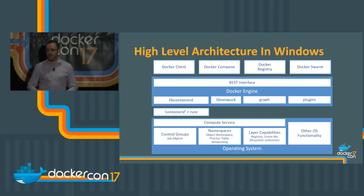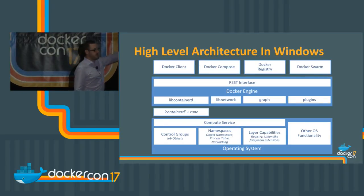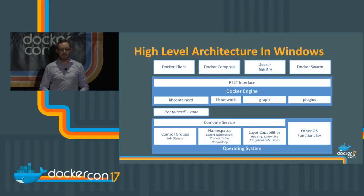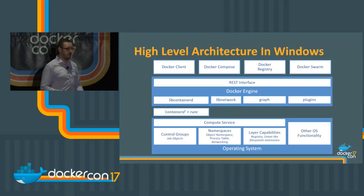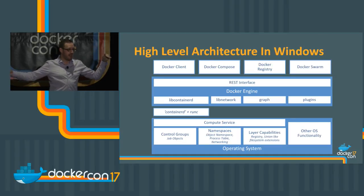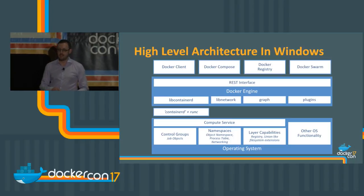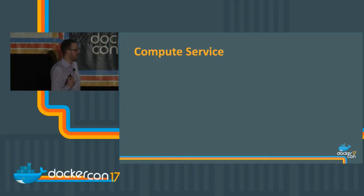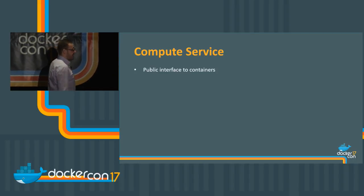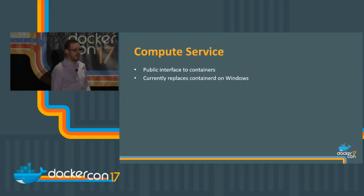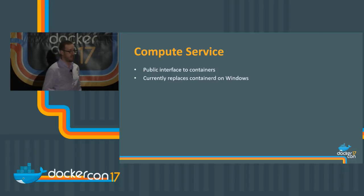The reason we built the compute system on top was for two reasons. First, we saw what was happening in the Linux community before containerd came along — a lot of different implementations calling the control group interfaces. We feared someday you'd have Docker running next to Rocket next to some other thing with no common way to manage them. We wanted one layer as the entry point to all things. The other reason was for Hyper-V isolation.